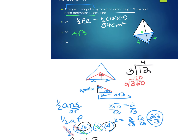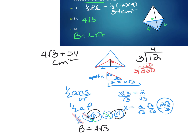For total area: base area plus lateral area = 4√3 + 54. In simplest radical form you're done, but using a calculator rounded to the hundredths place, the total area is approximately 60.93 centimeters squared.